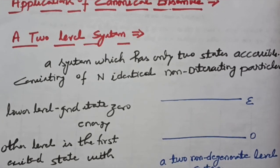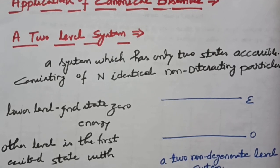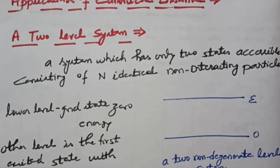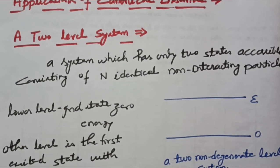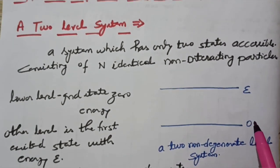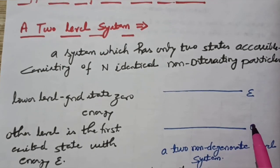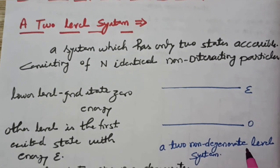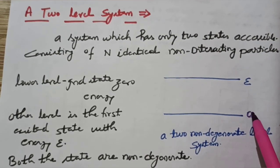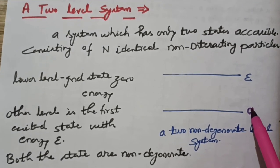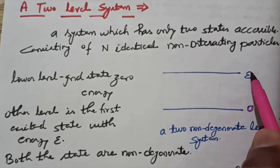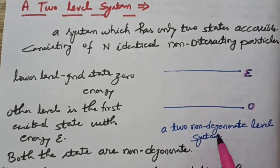We are now discussing applications of the canonical ensemble. The first example we are taking is a two-level system — meaning the system has only two accessible states. I have shown a diagram here: it is a two non-degenerate level system with a ground state at zero energy and a first excited state with energy epsilon.